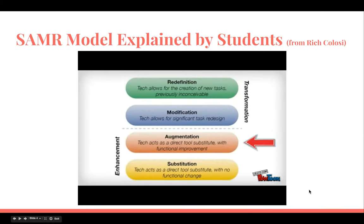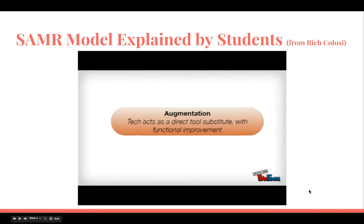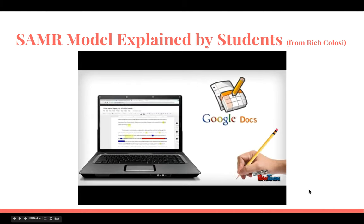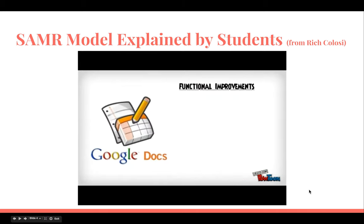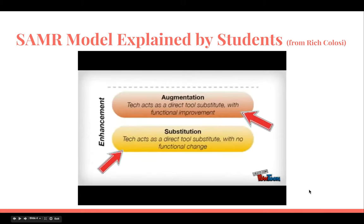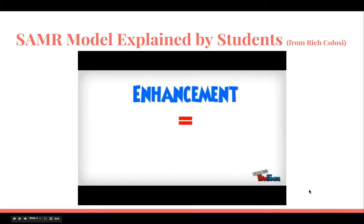The next level is called augmentation. The task is still the same, but the tech allows for some sort of functional improvement. So instead of writing a persuasive essay on paper, we could use a program like Google Docs. The task is still the same, but the unique features of a collaborative document provide some functional improvement. In both of these first two levels, the technology is used to simply enhance a lesson — it may make tasks more efficient, but it's not likely to make a big difference in future outcomes.